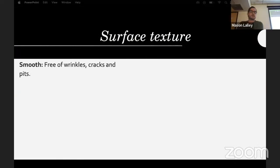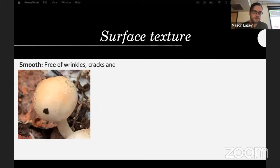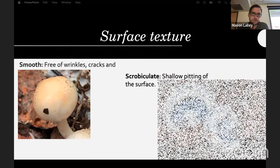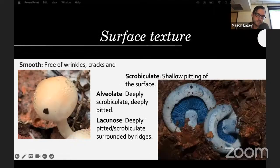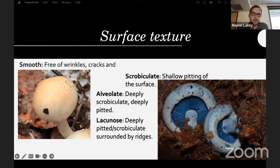Surface texture: it can be free of wrinkles, cracks, or pits. Scrobiculate means shallow pitting of the surface. Alveolate and lacunose are basically two different severities of scrobiculate. The same pitting appearance can appear on the stipe as well as on the cap.